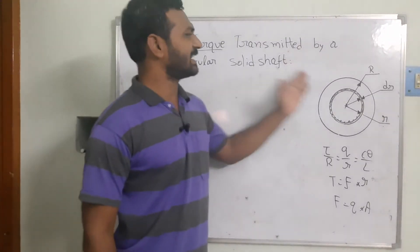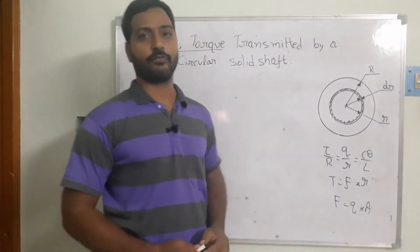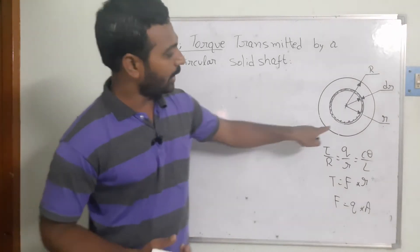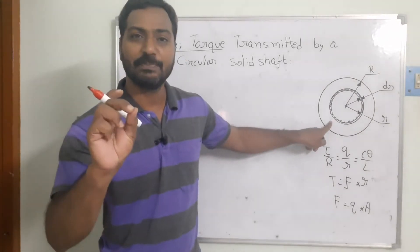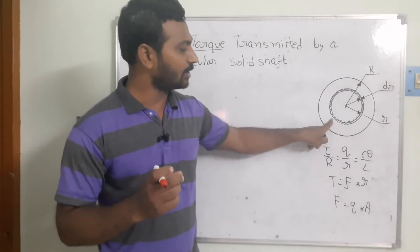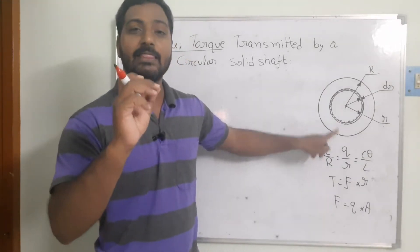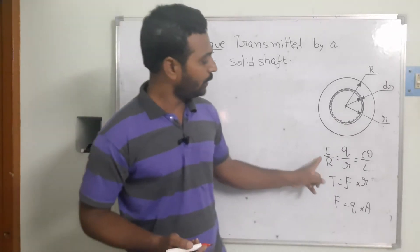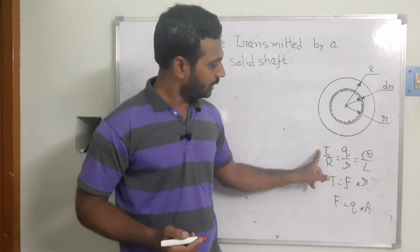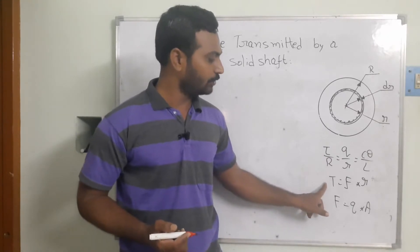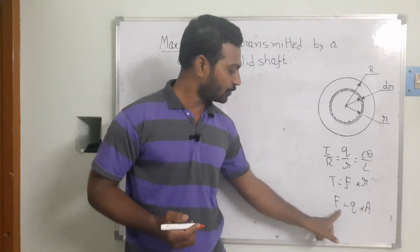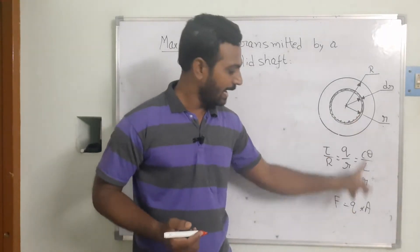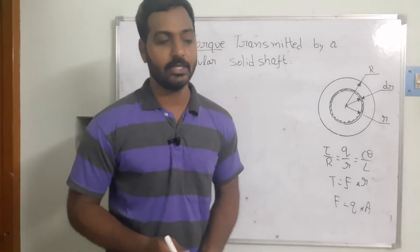We are trying to find out the maximum torque transmitted by this shaft. First we consider the torque transmitted by this elemental strip, calculate it, and then integrate over the whole shaft. We know the governing equations: torque equals force times radius, and force equals shear stress on the elemental strip times the elemental area.